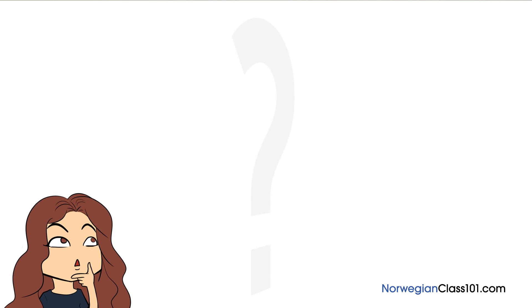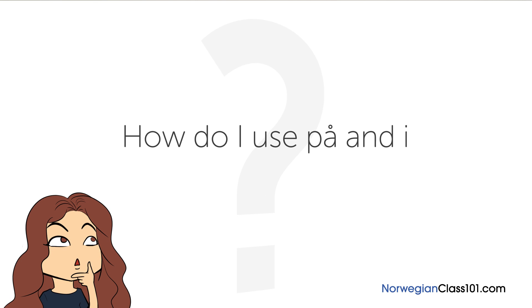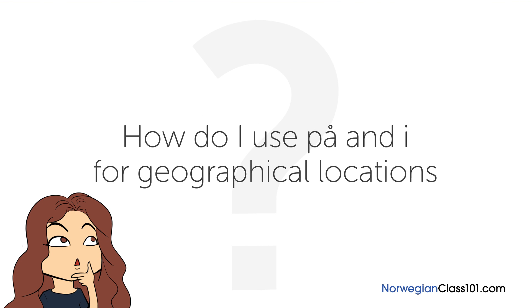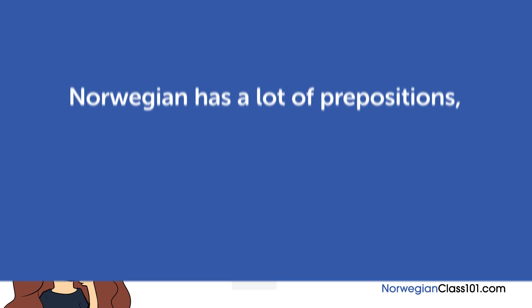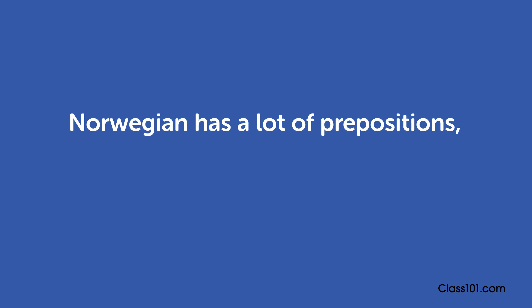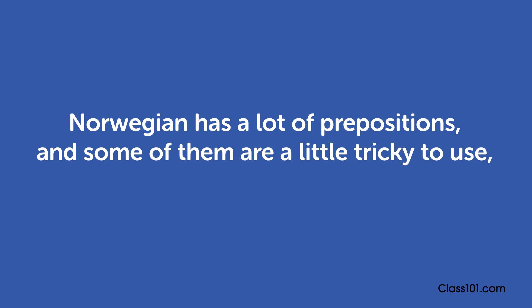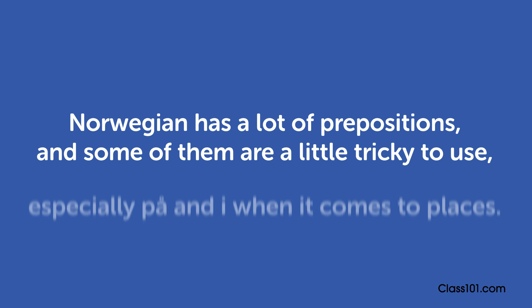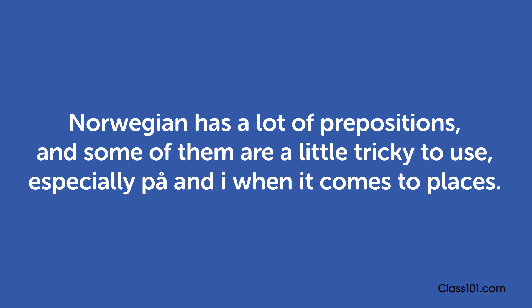The question for this lesson is: how do I use på and i for geographical locations? Norwegian has a lot of prepositions, and some of them are a little tricky to use, especially på and i when it comes to places.